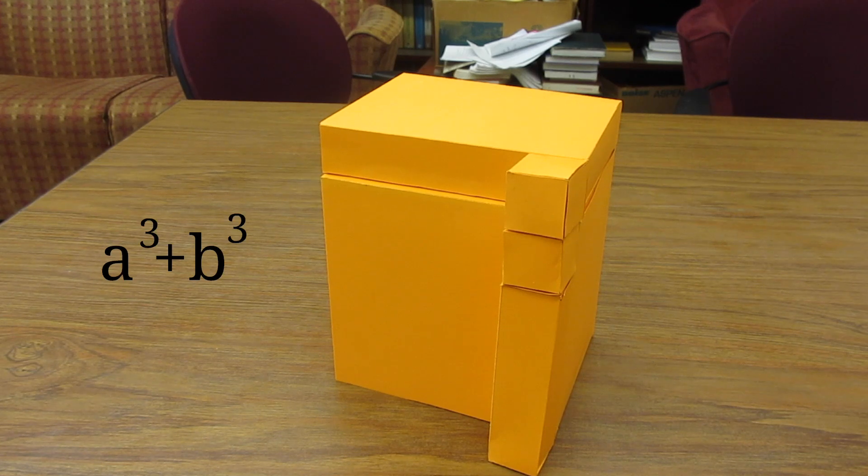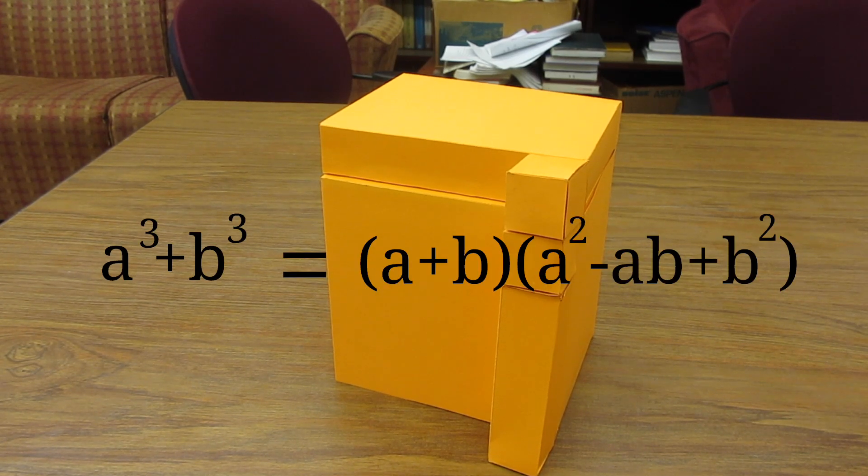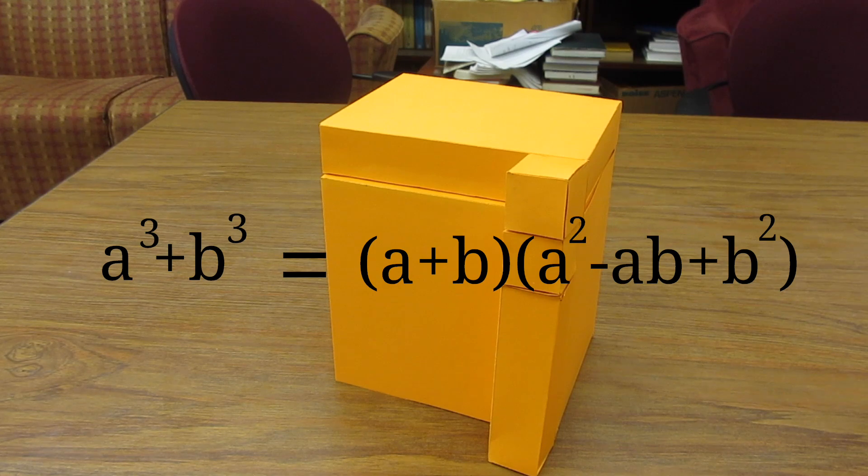But the total volume we know from earlier is a³ + b³. Therefore, we conclude that a³ + b³ is the same thing as (a + b) times (a² - ab + b²).